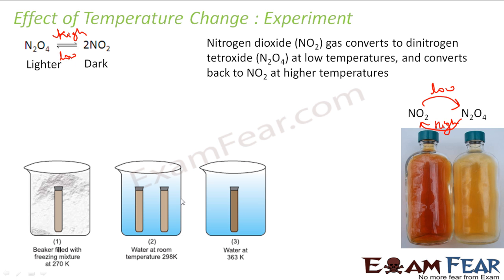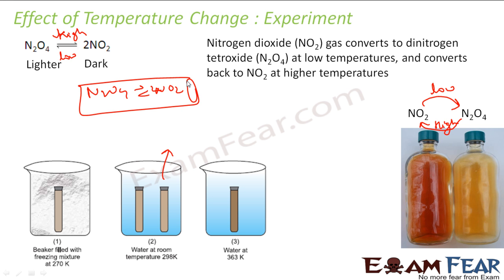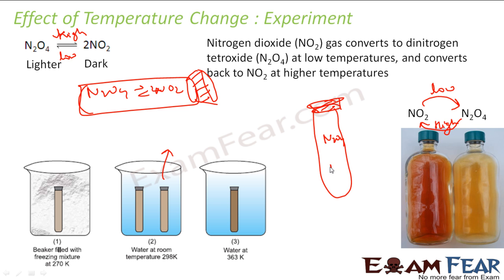In the lab, we have water at room temperature in a beaker. We have a sealed test tube which has both N2O4 and NO2 in equilibrium. They are at room temperature, so they have a certain color. The moment I take this test tube to hot water, at high temperature it moves towards the NO2 side. N2O4 from the tube converts into NO2, and NO2 is dark in color — so the test tube becomes darker.